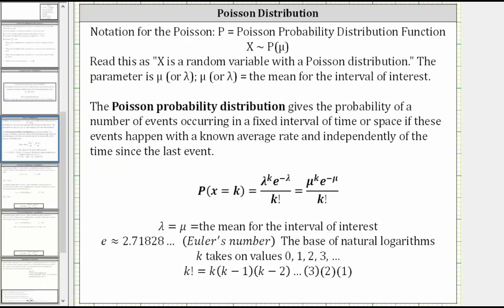For a quick review, the Poisson probability distribution gives the probability of a number of events occurring in a fixed interval of time or space if these events happen with a known average rate and independently of the time since the last event.